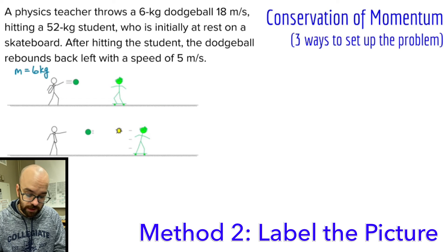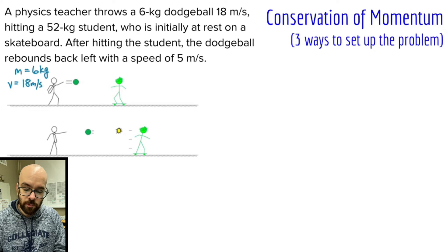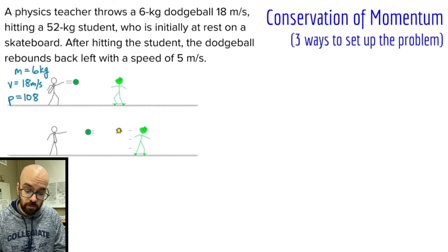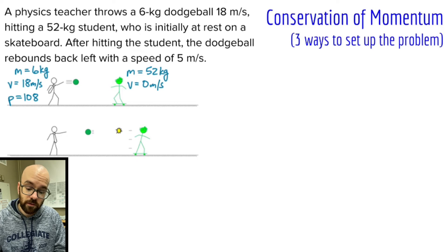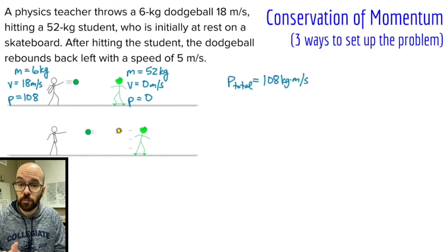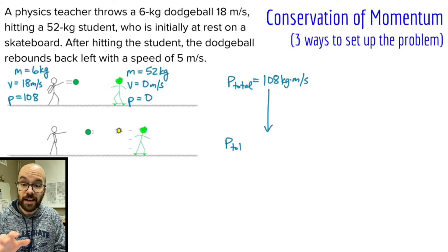The dodgeball is six kilograms — I'll label that on the before picture. The velocity before is 18 meters per second — I'll label it there, not on the after side. Six times 18 gives a momentum of 108. For the student before: mass is 52, velocity before was zero, and 52 times zero gives a momentum of zero. The total momentum is 108 plus zero, giving 108 kilogram meters per second. By conservation of momentum, the total momentum before equals the total momentum after, so the total momentum after must also be 108.